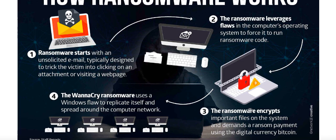Once this code starts executing, the ransomware encrypts the most important files on your system. Encryption means they lock your files — they convert your readable files into non-readable formats. Once files are encrypted, if you want to read or access them, you need a key to decrypt those files and make them readable again. If you want that key to decrypt your files, you need to pay some money — a ransom — to the hackers.